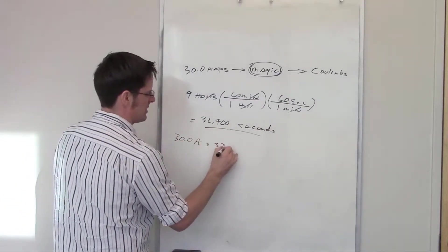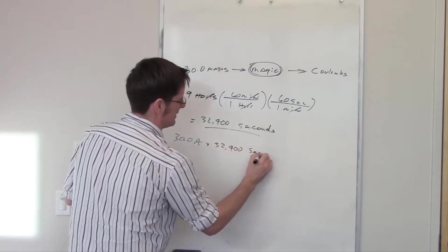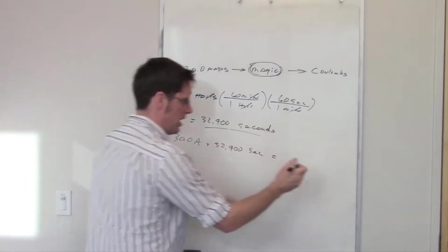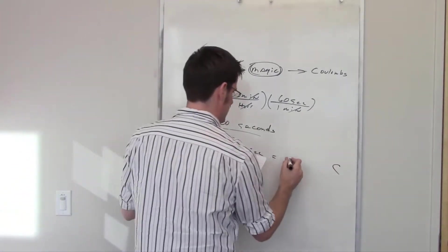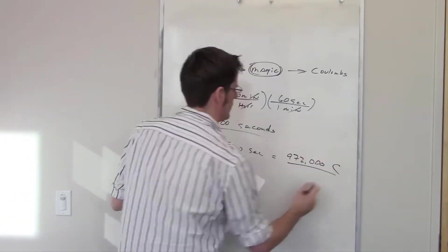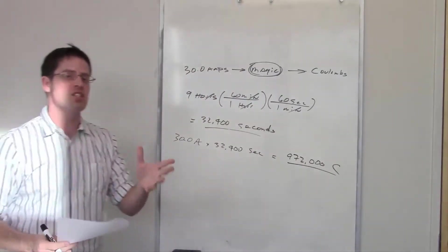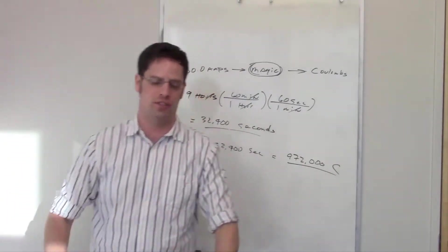So I can take 30 amps, multiply that by 32,400 seconds, throw that in the magic box, voilà, it comes out with coulombs. That final number ends up being 972,000 coulombs.